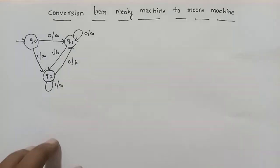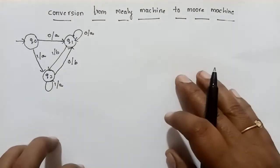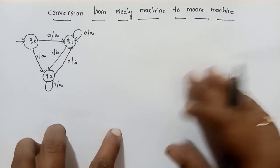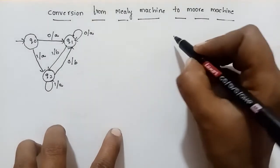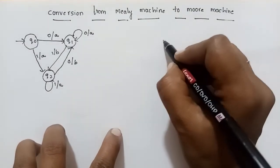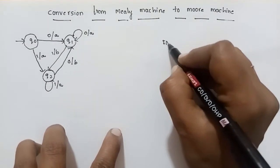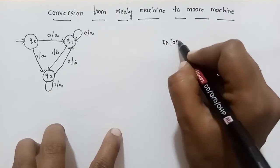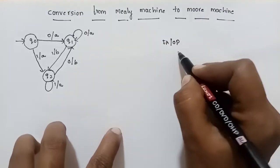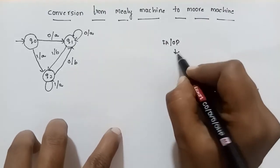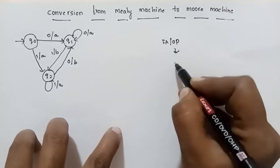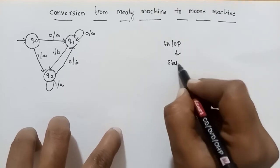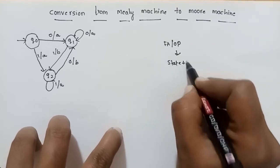We have discussed this in previous videos. A Mealy Machine is a Finite Automata with Output. This output will depend on the state plus input.